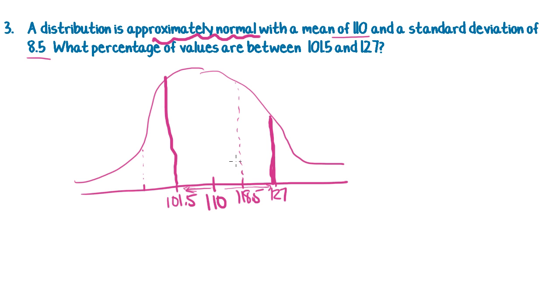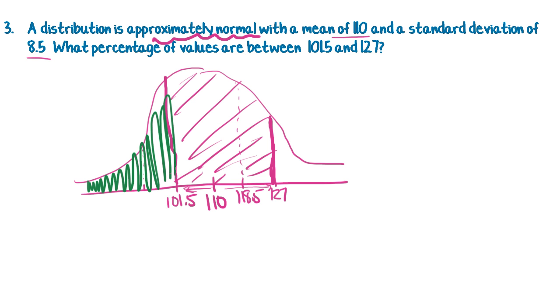The easiest way that I can think of to work this out is not to think about what you're looking for. So we are actually looking for this section in the middle here. But it's actually easier to think about what you're not looking for. Because what we're not looking for is anything that's in that tail up to that point, and also anything that's in that tail after that point. Those are the bits that we've excluded, and we know we've got 100% overall.